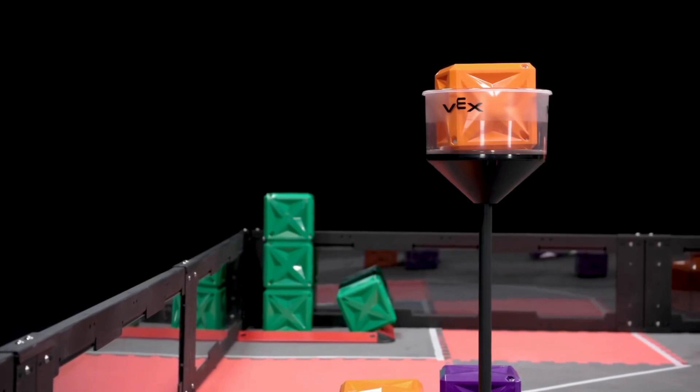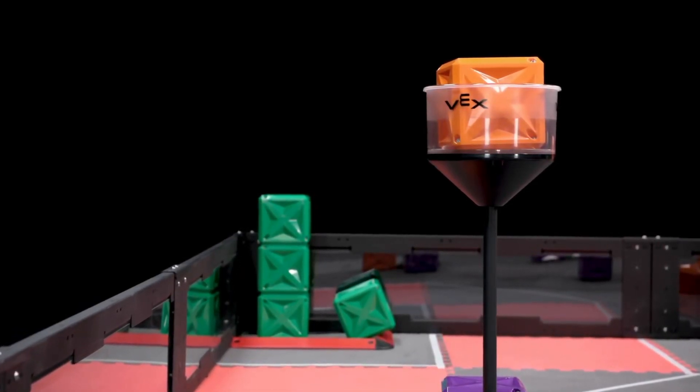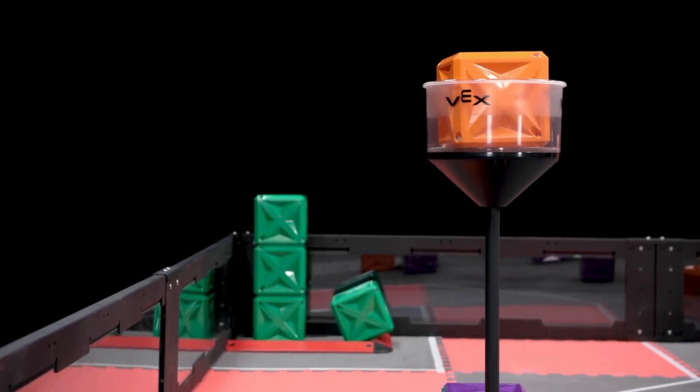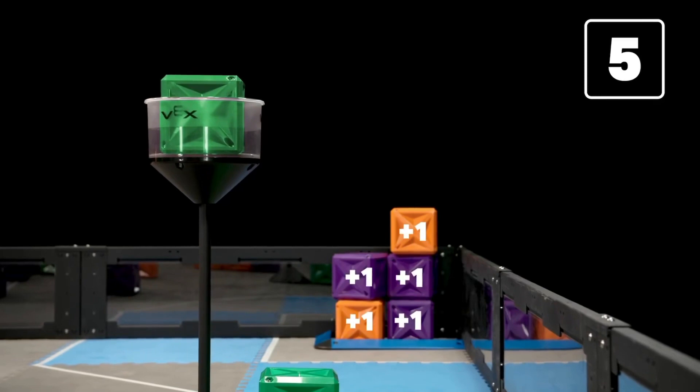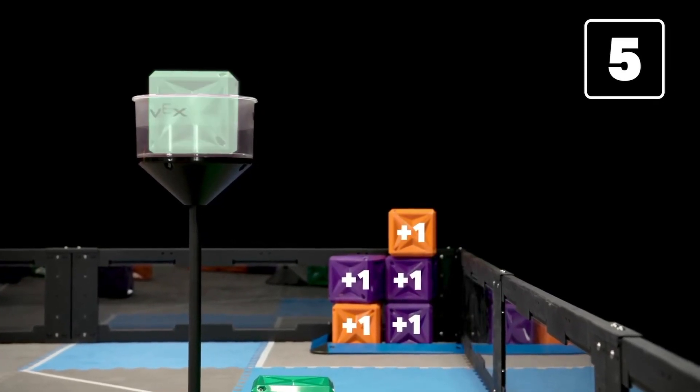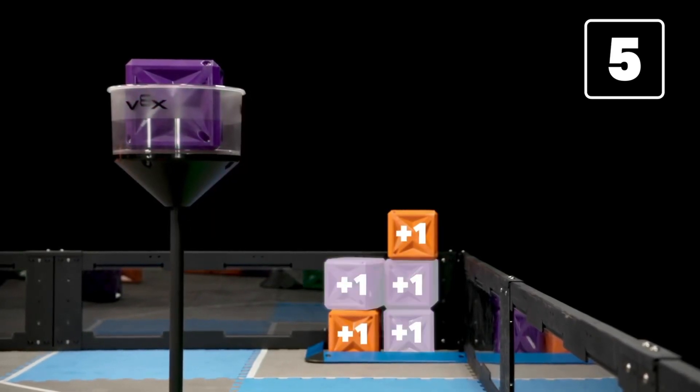However, the exact value of each cube is determined by how many cubes of that specific color have been placed in towers. All cubes start with a base value of one point. Then, each additional cube of that color that has been placed in a tower increases the point value of that color's scored cubes by one point.